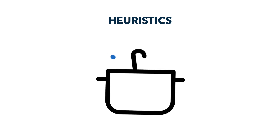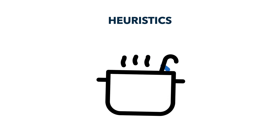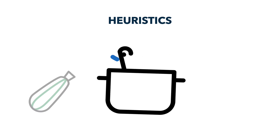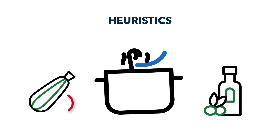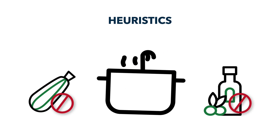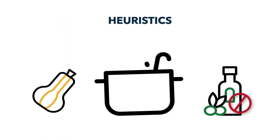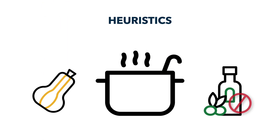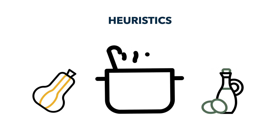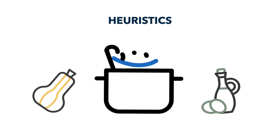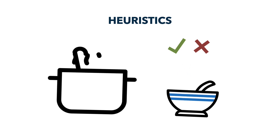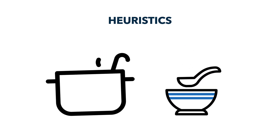Let's revisit our recipe example. Imagine you're preparing vegetable soup for a dinner party that's just a few hours from now. The recipe calls for zucchini and olive oil, but you discover you only have yellow squash and avocado oil on hand. Pressed for time, you decide to make do with what's available, substituting yellow squash for zucchini and avocado oil in place of olive oil. You also find yourself adjusting the amount of salt or water to improve the taste. In the end, there's no guarantee the soup will taste exactly like the original recipe.